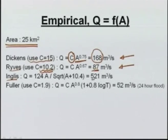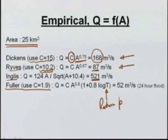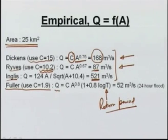Fuller's equation, commonly used in the US, accounts for the return period as well. Using a C of 1.9 (on the higher side), Fuller's equation gives 52 m³/s, which represents a 24-hour flood. So empirical equations typically give daily floods, not the 3-hour flood obtained from the rational method. We then look at frequency analysis, where we have a gauged catchment with daily flow data available.